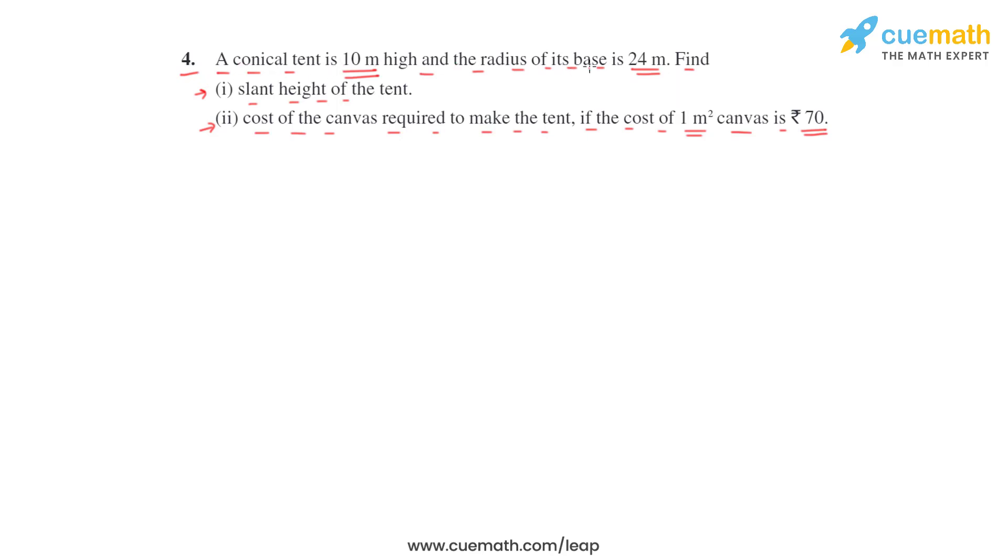And the radius of base of the tent. In the first part they are asking to find the slant height. In the second part they are asking to find the cost of the canvas when the rate is one square meter rupees 74. So let's quickly make a diagram.